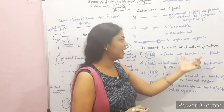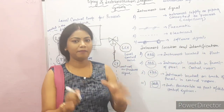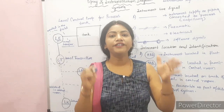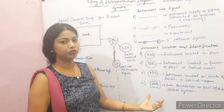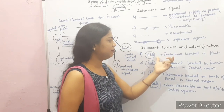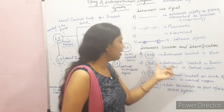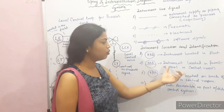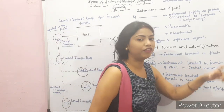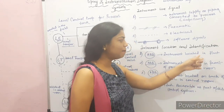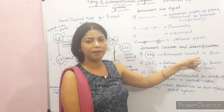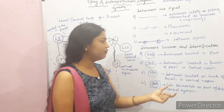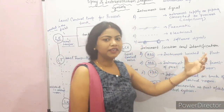Now let's talk about instrument location and identification. To represent where an instrument is located, we use specific symbols. A round shape — a circle with letters — represents an instrument located in the plant. If there is a horizontal line inside the circle, it represents an instrument located in front of the panel in the control room.